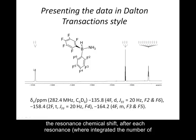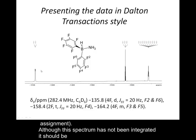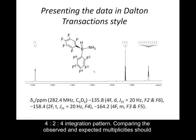It is customary to read the spectrum from left to right, starting with the highest values of chemical shift and moving to the lowest. The first signal is at minus 135.8 ppm. Looking at the intensity, there are four fluorines. It is a doublet. The coupling constant, expressed as J in italics with subscript FF — because it is a coupling between two fluorine atoms — is 20 Hz. The signal is assigned to F2 and F6.